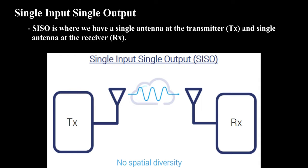Single Input Single Output — SISO — is where we have a single antenna at the transmitter (TX) and a single antenna at the receiver (RX).